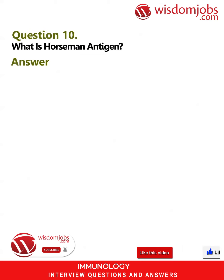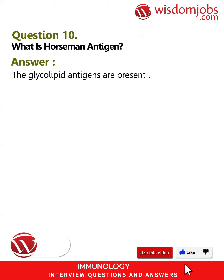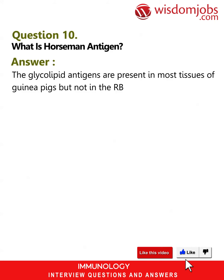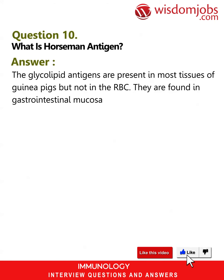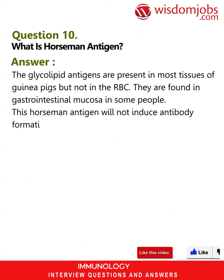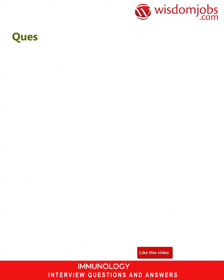Answer: The glycolipid antigens are present in most tissues of guinea pigs but not in the RBC. They are found in the gastrointestinal mucosa. In some people, this Forssman antigen will not induce antibody formation.